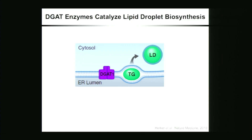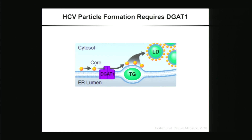The last step of the biosynthesis of triglycerides is catalyzed by DGAT enzymes—two of them in humans, DGAT1 and DGAT2. These triglycerides accumulate in between the bilayer of the ER membrane, giving rise to lipid droplets. Our lab showed a few years ago that the viral capsid core interacts specifically with DGAT1 and gets loaded onto lipid droplets through DGAT1 activity. We found that DGAT1 is a very important host factor—if knocked down or if its activity is inhibited, it strongly impairs HCV assembly.